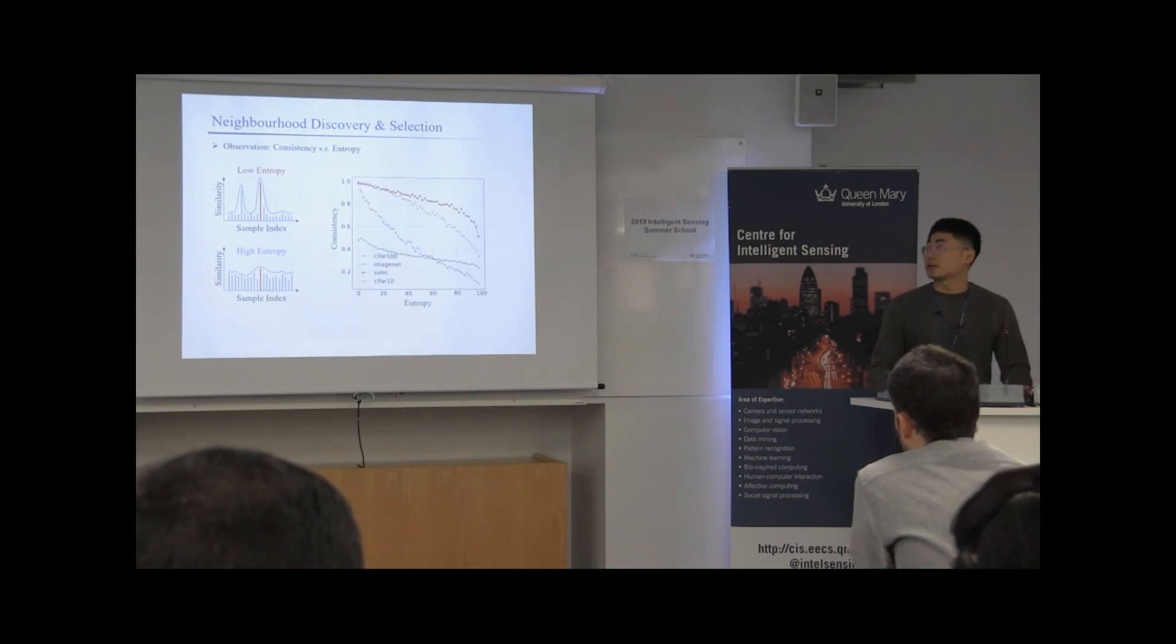And we verified our assumption on four widely adopted object recognition datasets by plotting the relationship between neighborhood consistency and the entropy of their corresponding anchor sample similarity distribution. And it turns out that the lower the entropy is, the higher the consistency will be, which verified our assumptions.